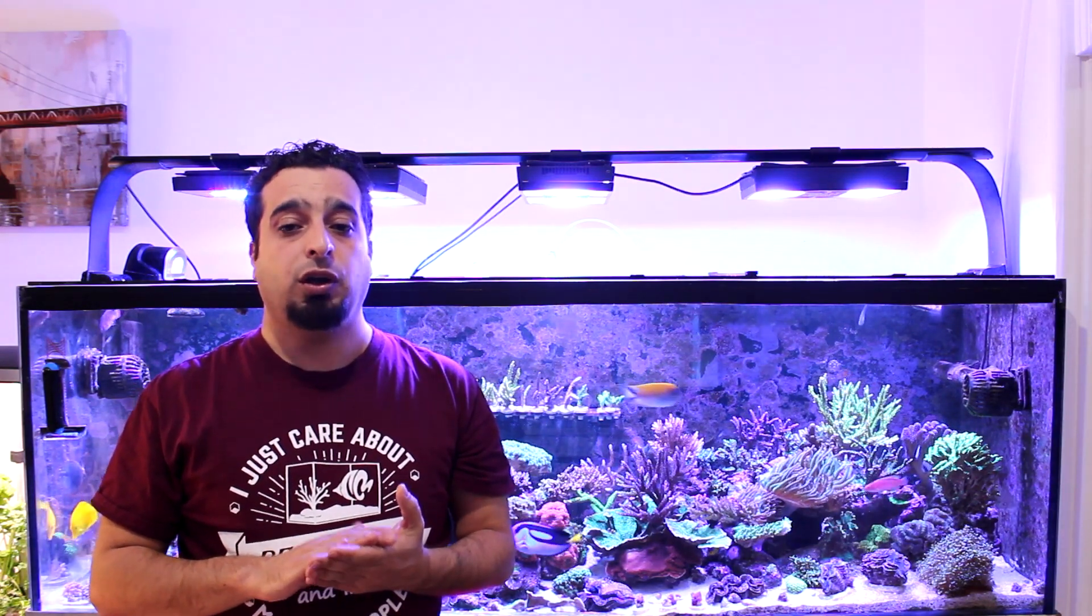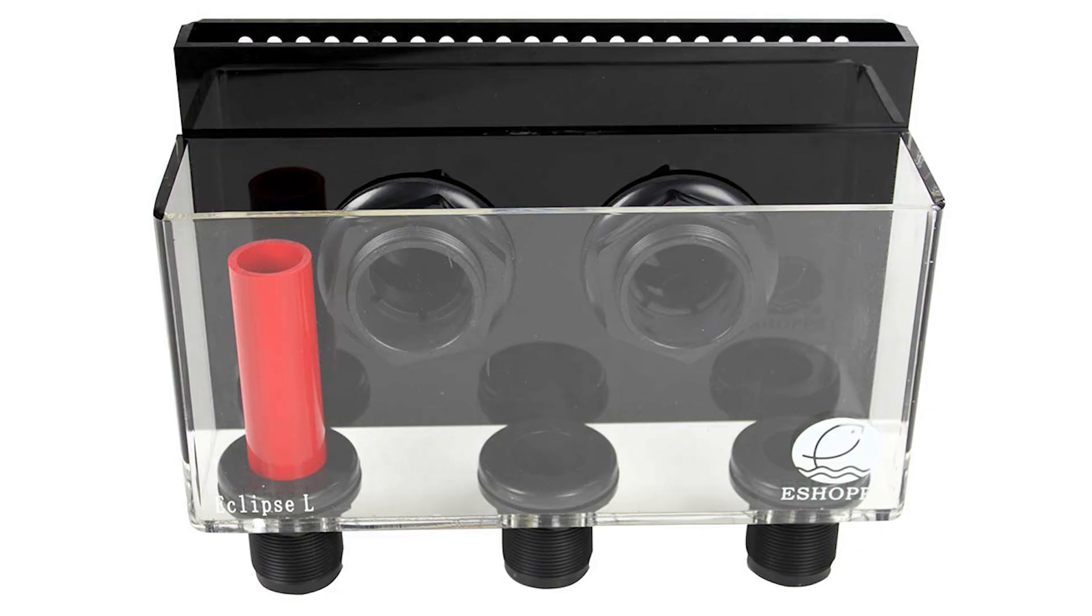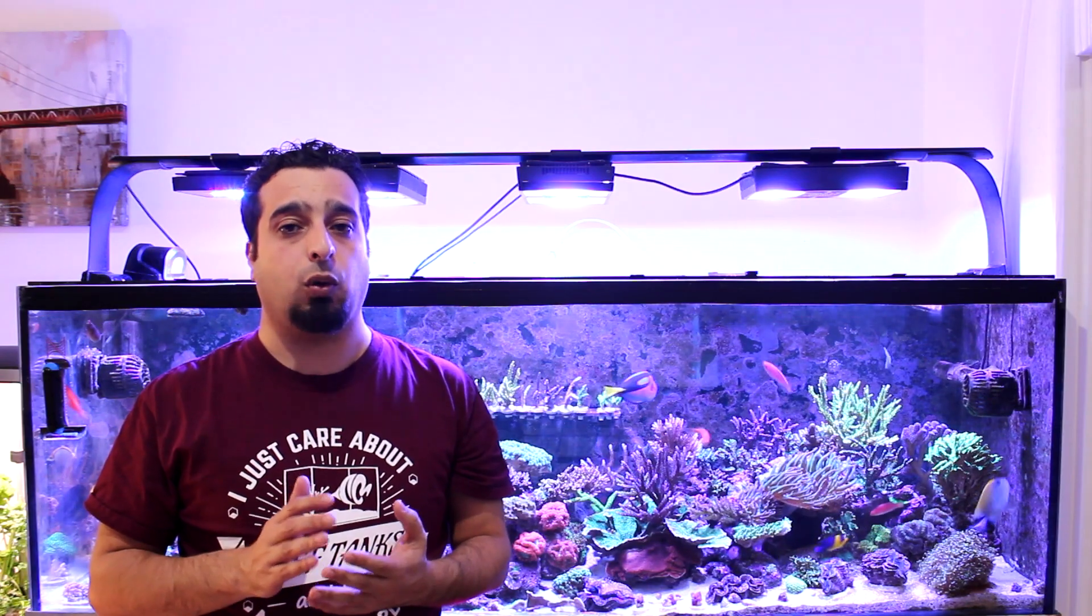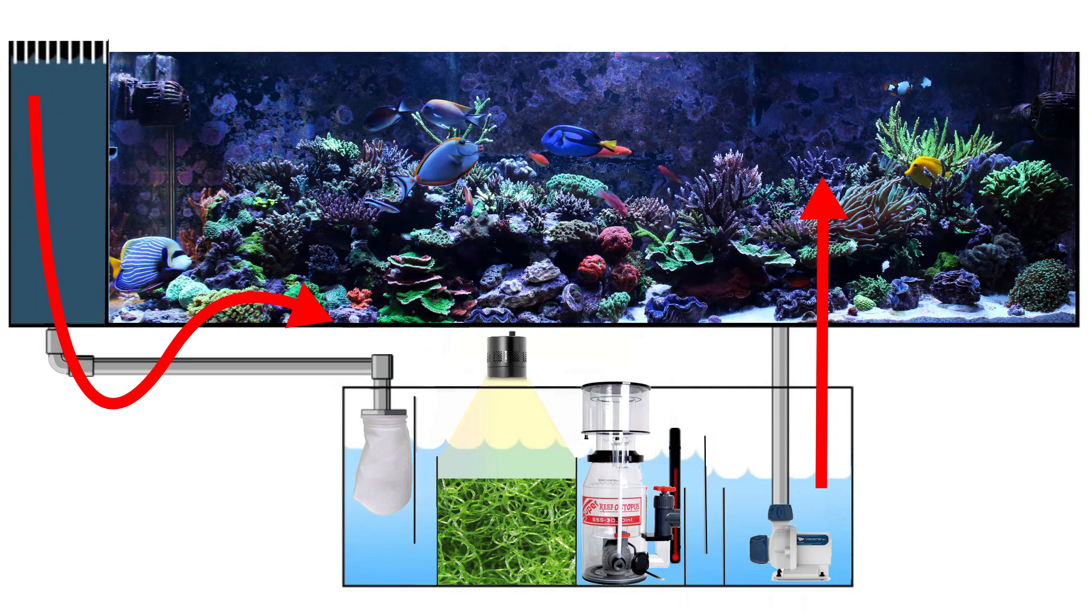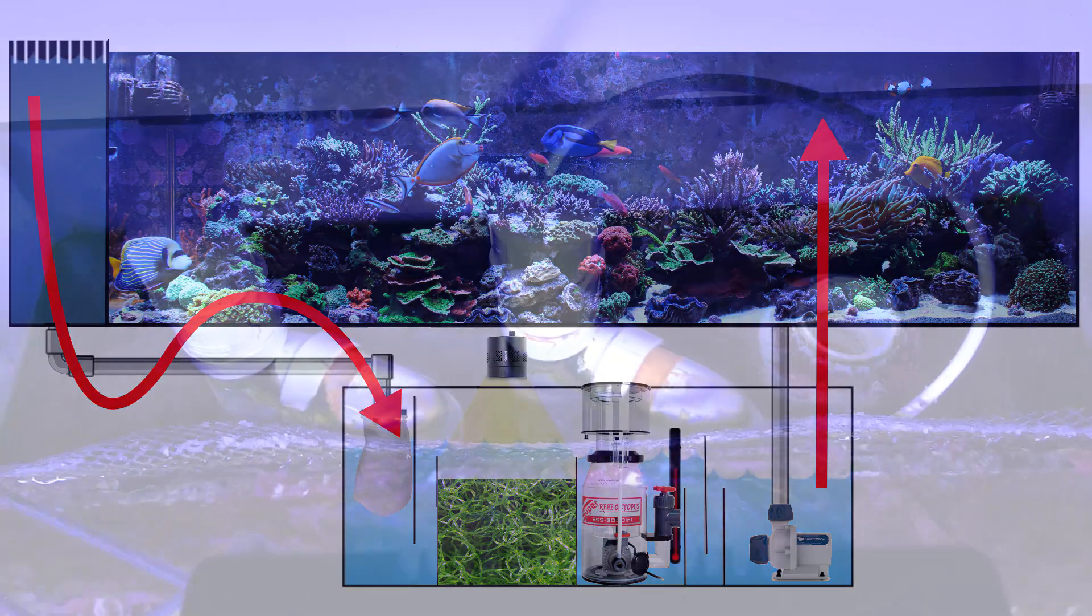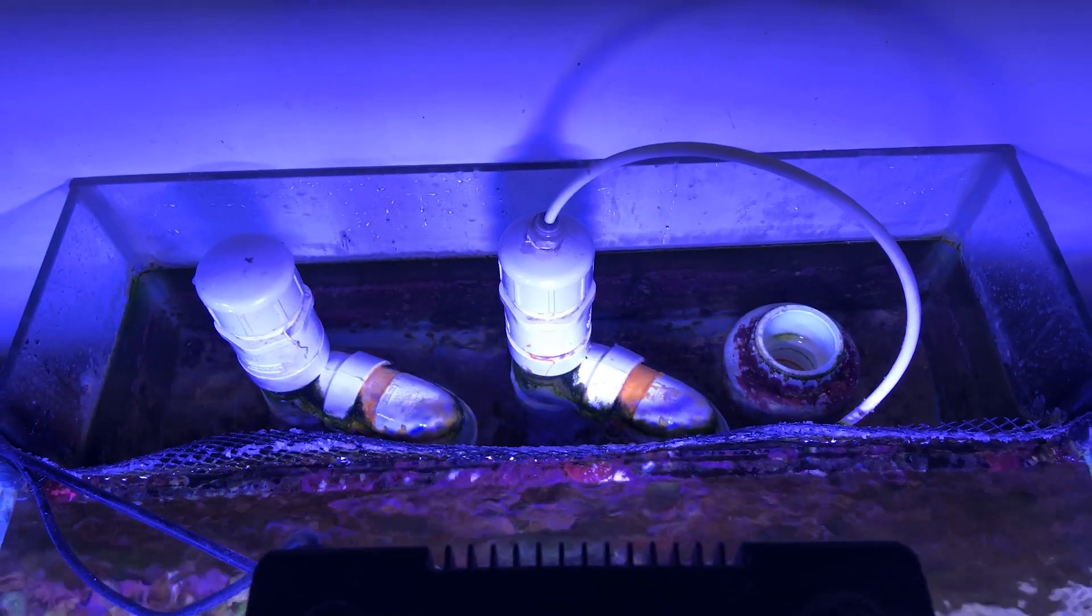If the tank doesn't have an overflow, you can order a ready-made overflow like eShopps or you can ask your aquarium builder to build one. The water will flow from the display using an overflow box. These boxes can be either external or internal.